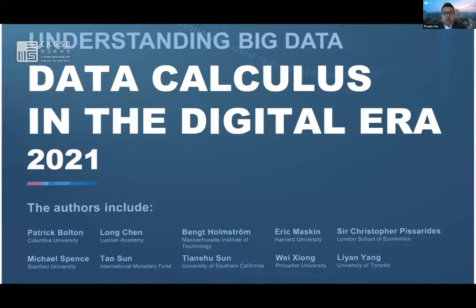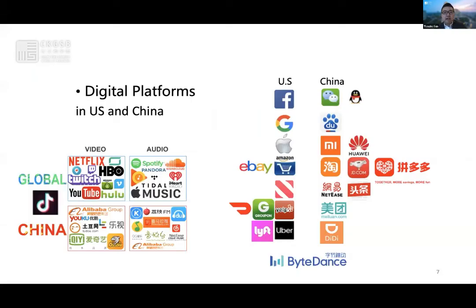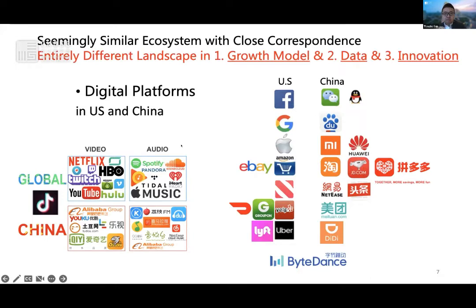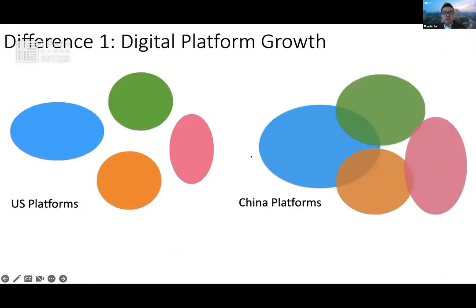Last year, I was invited to write an overview for the Nobel laureates in economics on the data calculus in the digital era, which also covered some recent developments in China on data regulation. But for the interest of time, I'd just like to highlight three key differences between the US and China on digital transformation. Based on this comparison, while the two ecosystems seem to have a nice correspondence, I would argue that the underlying dynamics and forces are quite different, especially in their growth model, the concentration and scope of data, and the innovation mode.